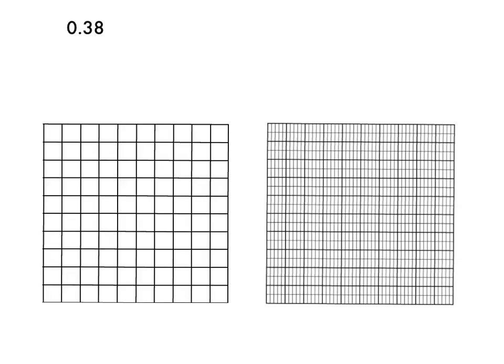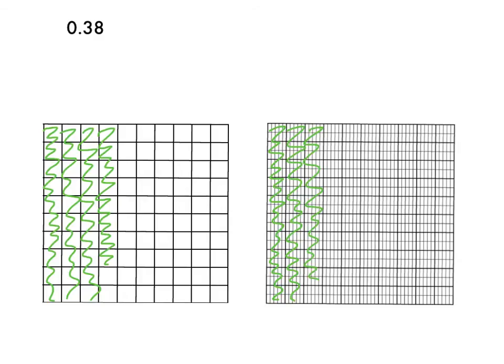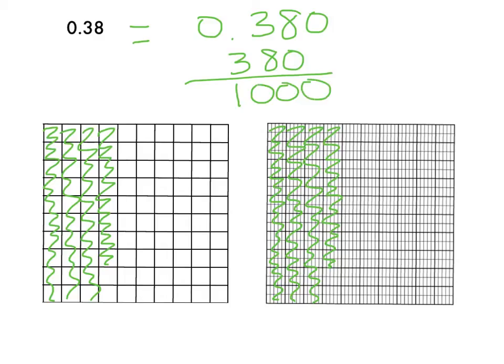Thirty-eight-hundredths. I'm going to start with my hundredths grid, and that means I'm shading in ten, twenty, thirty, and then eight more hundredths. But that is the same as three-hundred-eighty-thousandths.